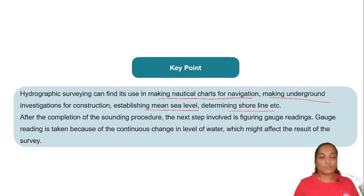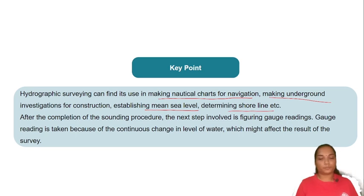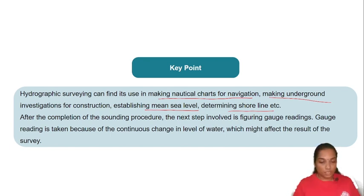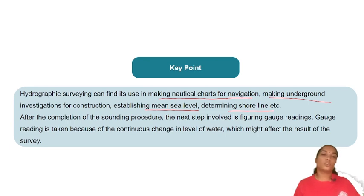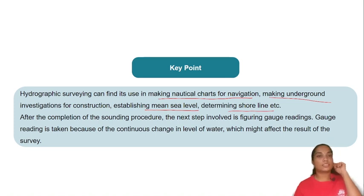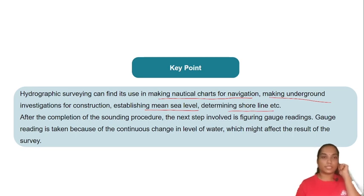After the completion of the sounding procedure, the next step is gauge reading. Gauge reading is taken because of the continuous change in the level of water, which might affect the results of the survey. Water level is recorded at regular intervals to ensure the gauging procedure gives accurate results.